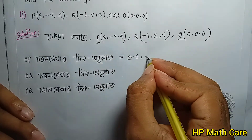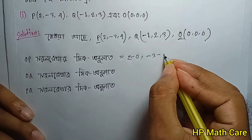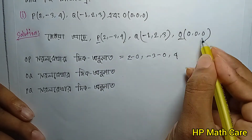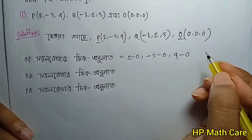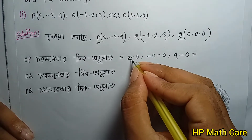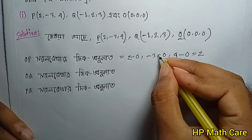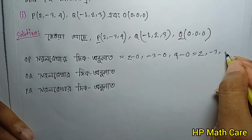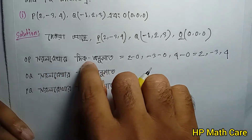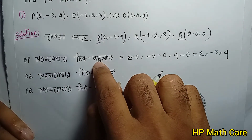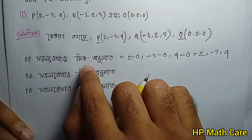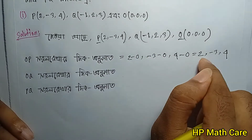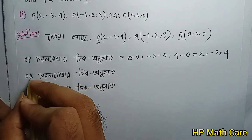So if I do: minus 3 minus 0 equals minus 3, and 4 minus 0 equals 4. So what will be the ultimate ratio? OP direction ratios are (2, -3, 4). That's the official direction cosine ratio for OP: 2, -3, 4.